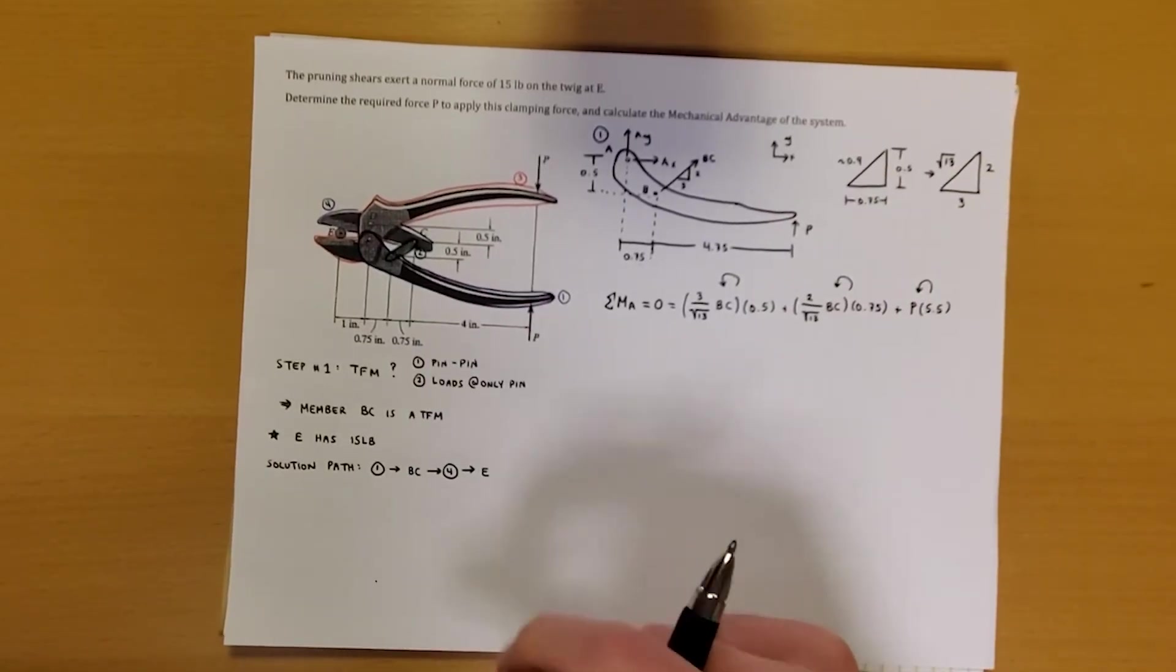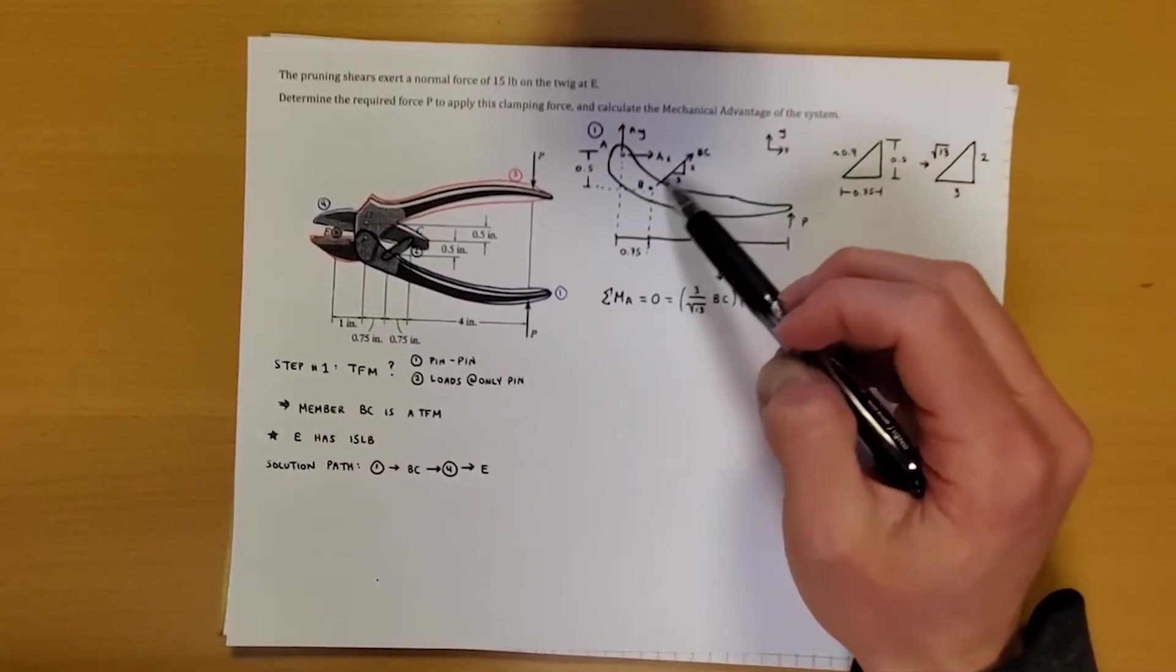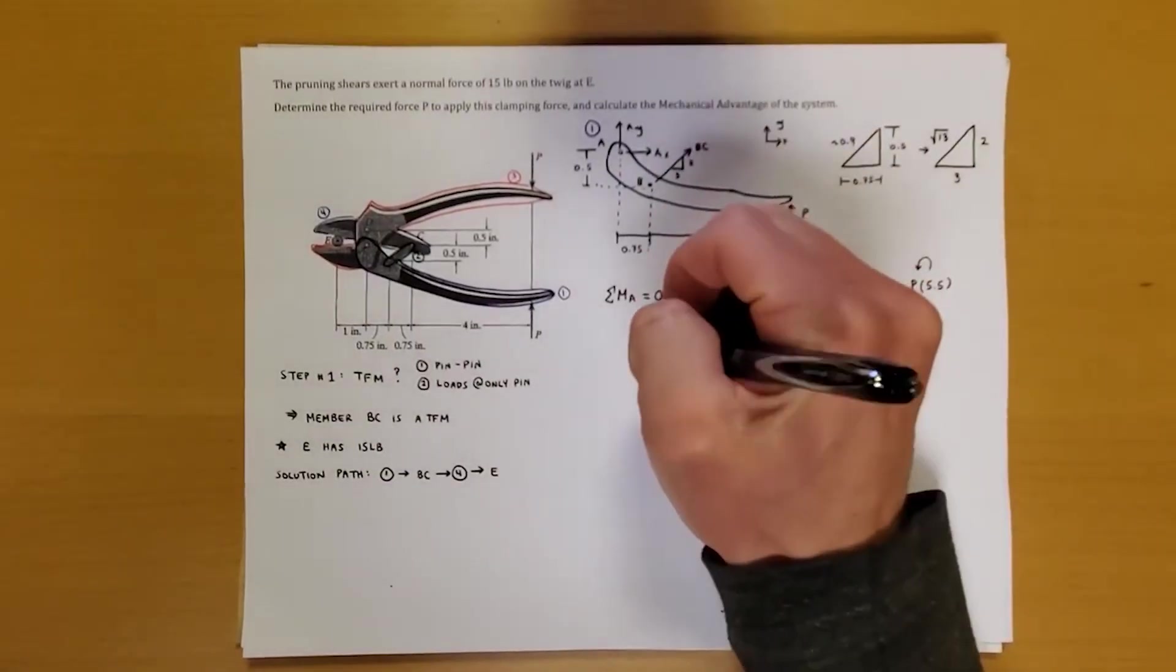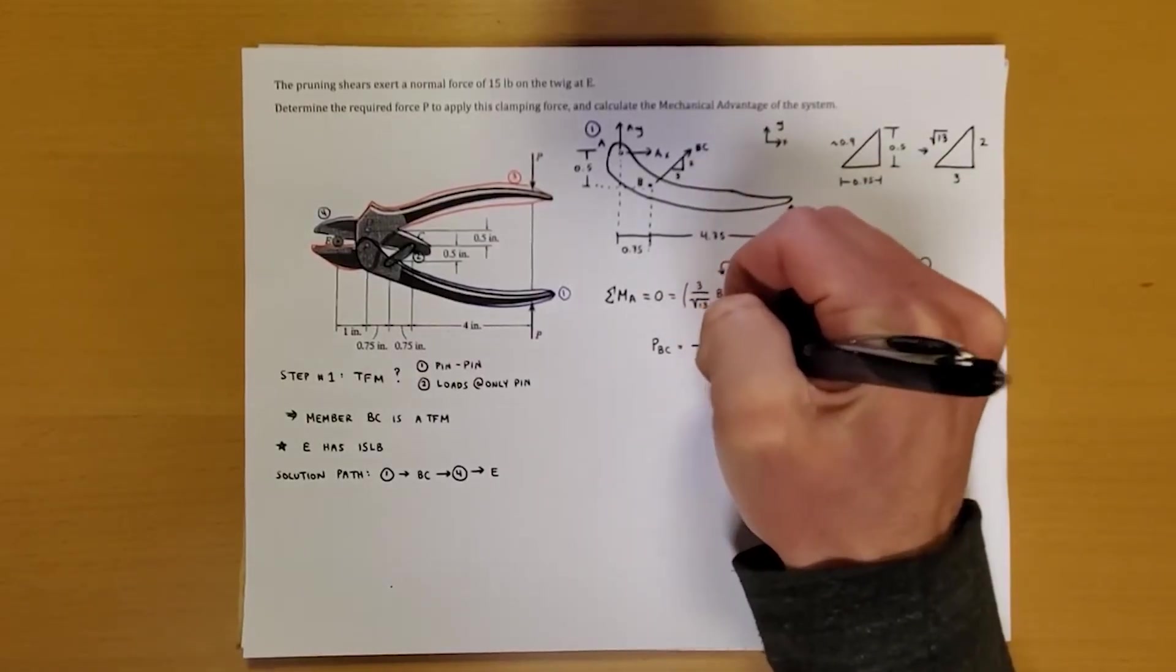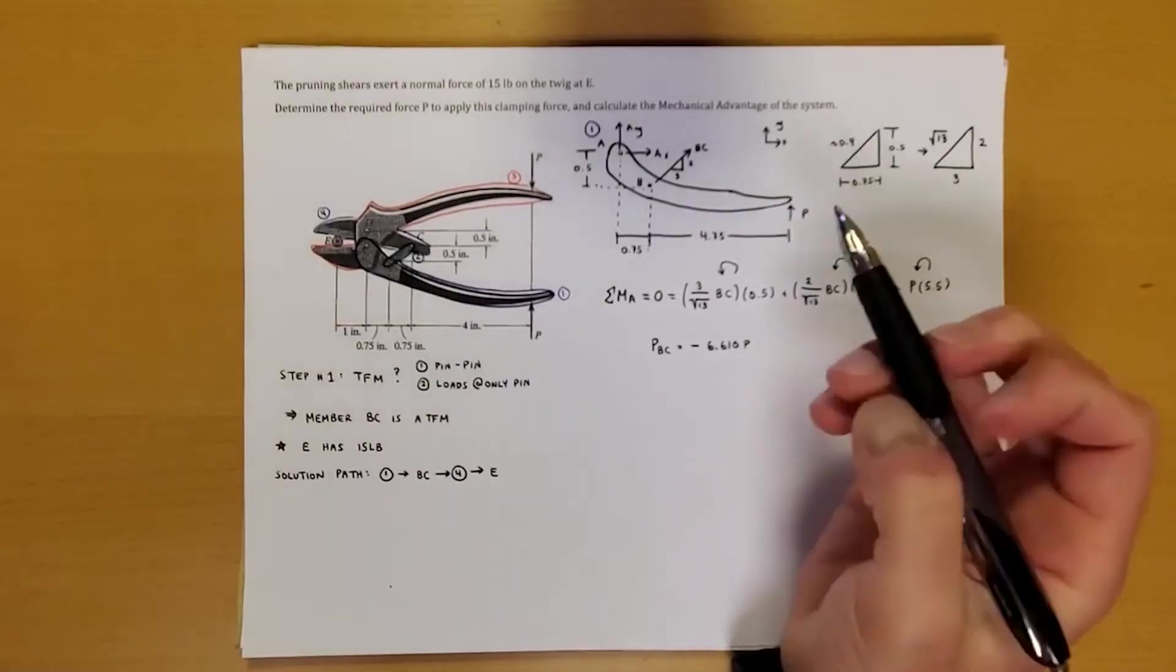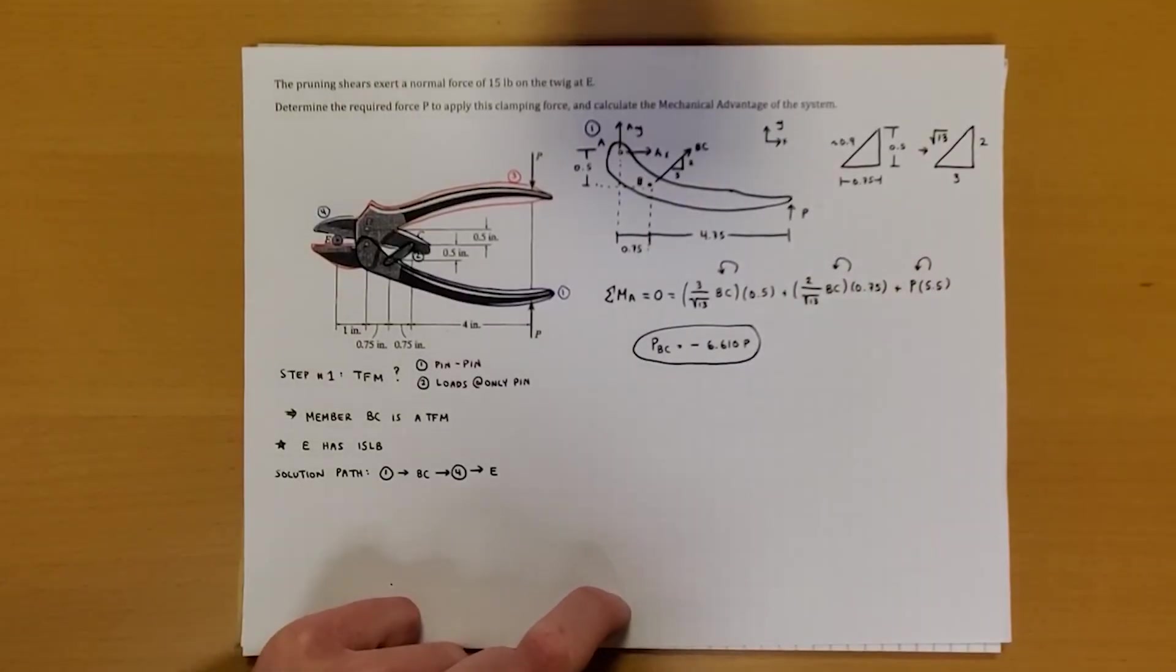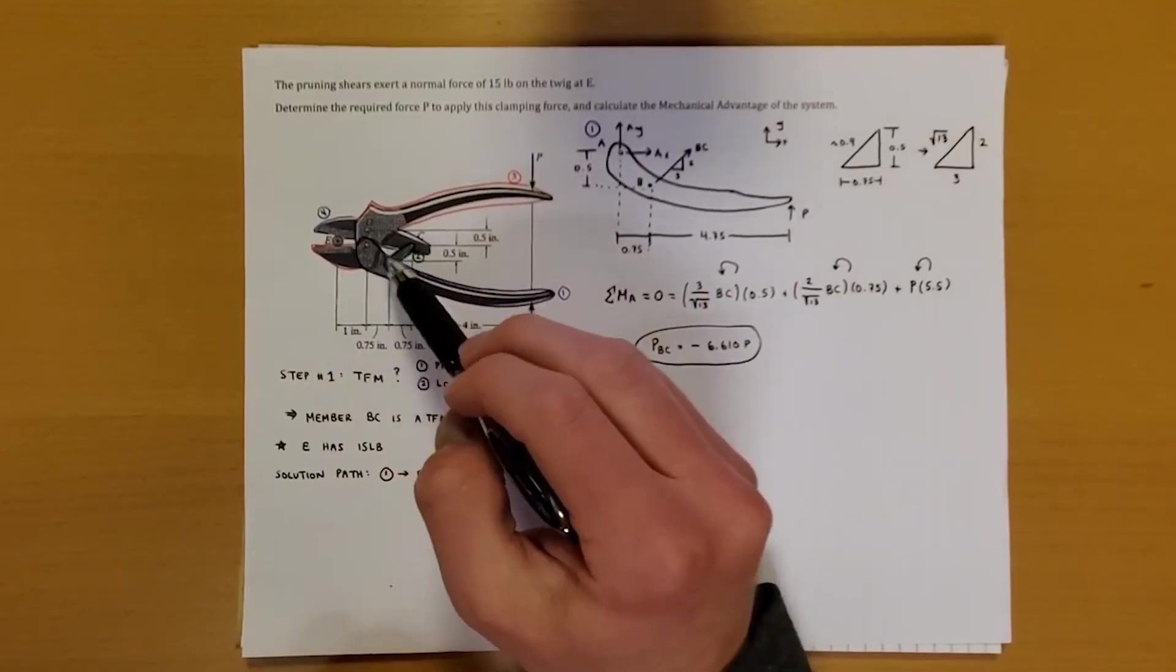Now something you can see that's happening already is that every single one of our things in our moment equation is counterclockwise. We know that that can't be true. So what's probably going to happen is that BC should have actually been going inward, meaning that BC is in compression. So when we do this, we get that PBC is equal to negative 6.610P. And we'll kind of hold on to this. We won't box it. We'll just circle it, which one could argue is basically the same thing. But we'll circle that answer. And now what we'll do is we'll go look at this piece right here. Essentially EDC. And we'll figure out what's going on.